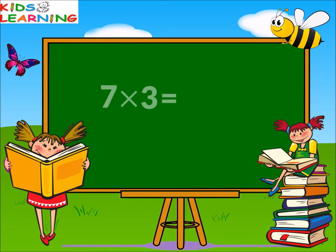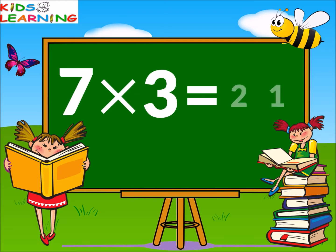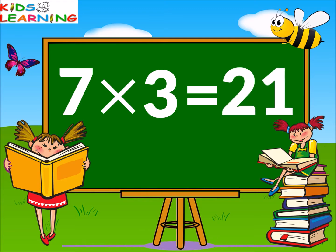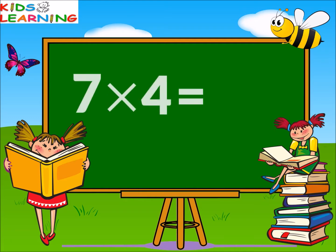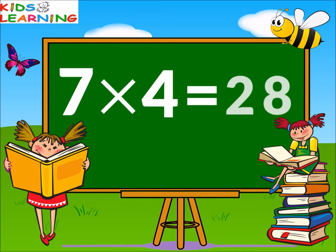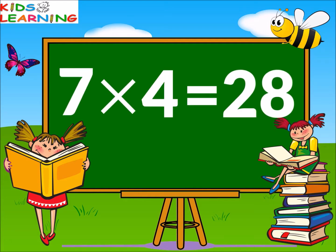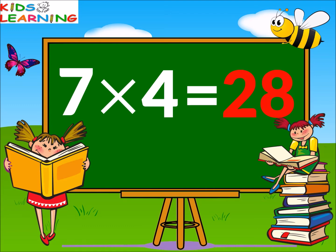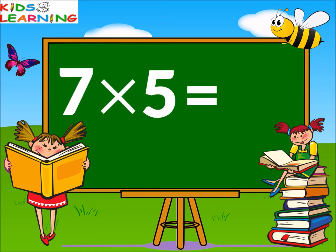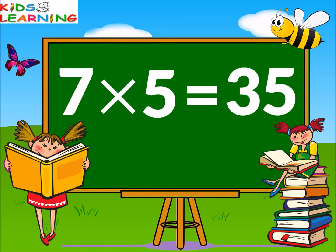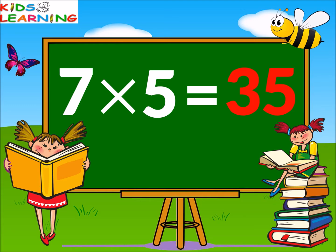Seven threes are twenty-one. Seven fours are twenty-eight. Seven fives are thirty-five.